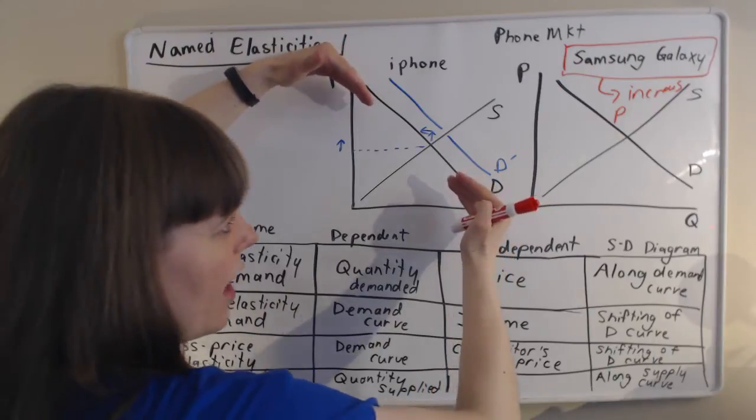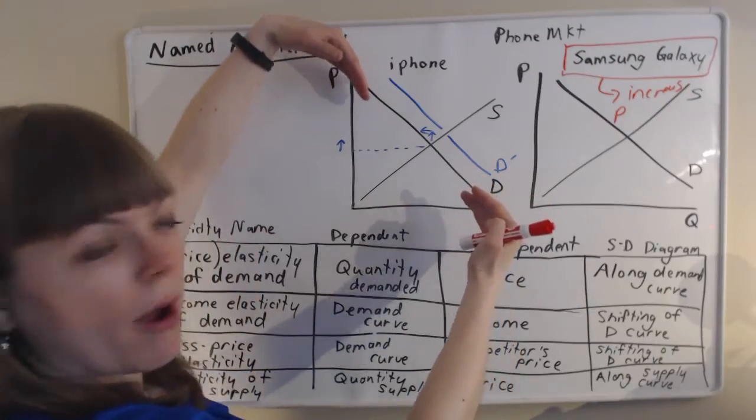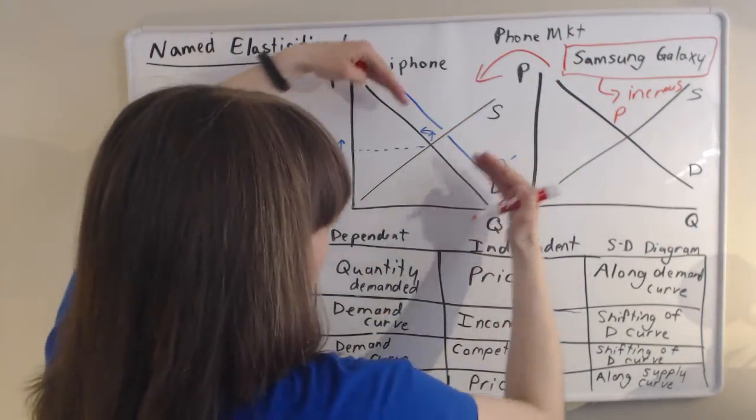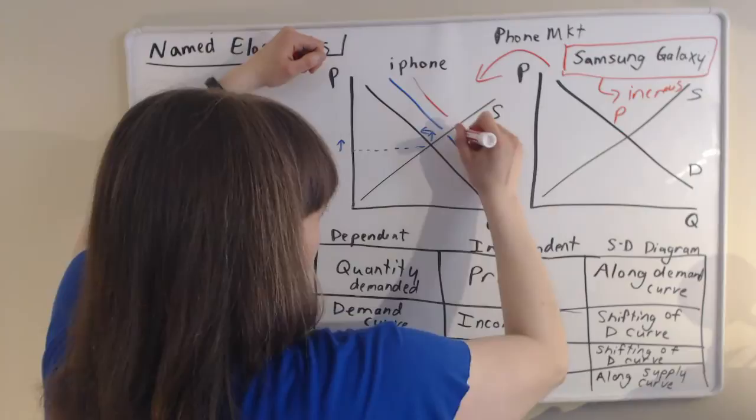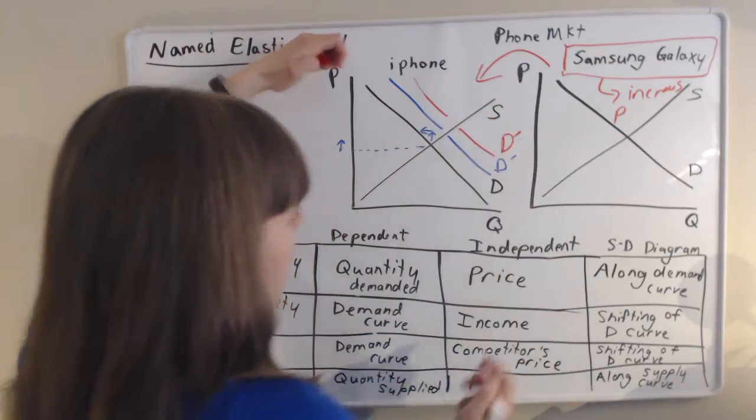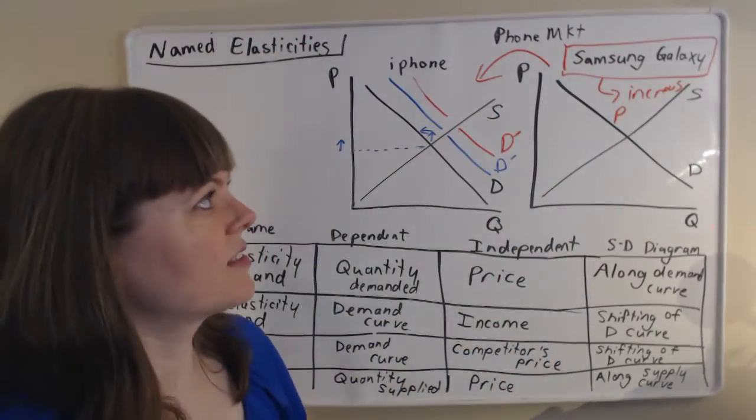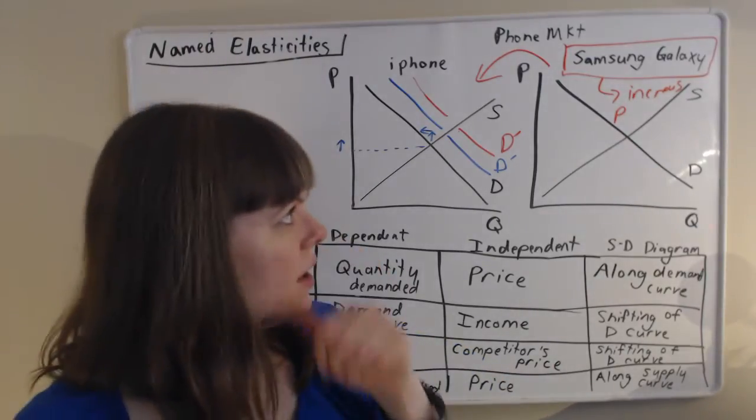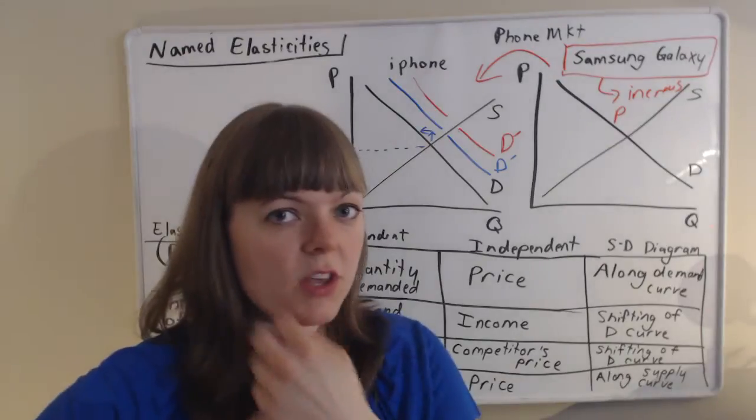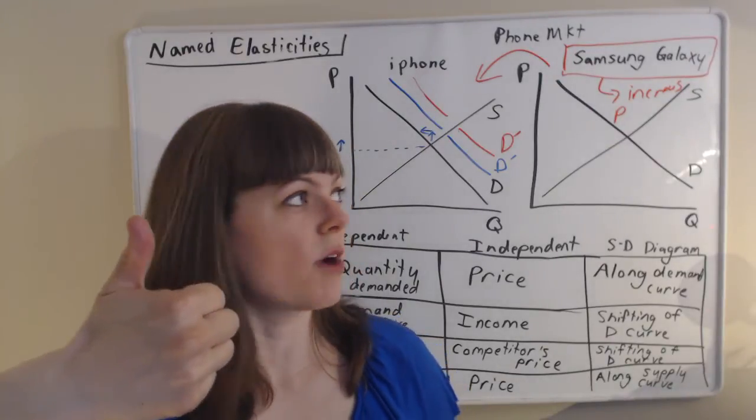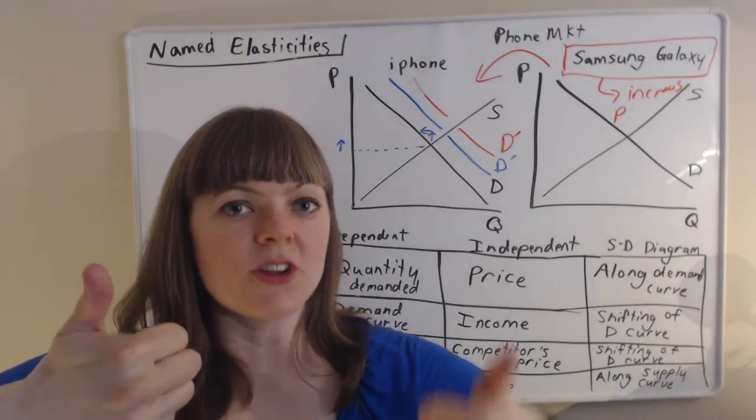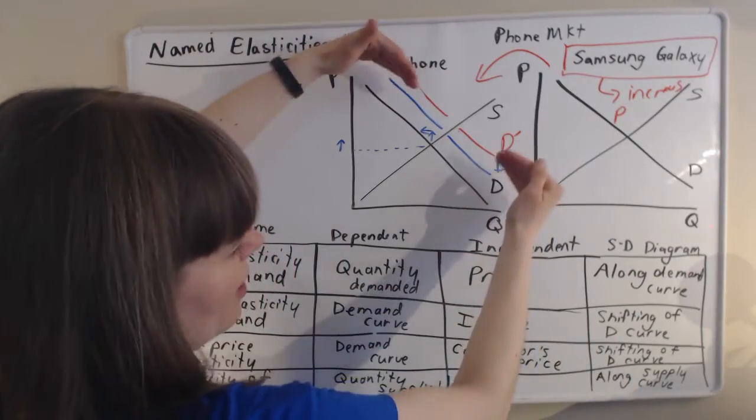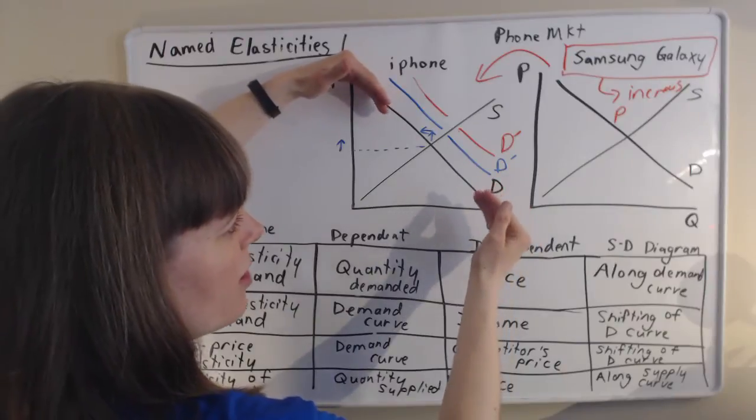So what's going to happen to the demand curve for iPhones? Well, iPhones are going to become more popular as people move over to the substitute, so people move between markets. So we're going to have an increase in the demand for iPhones when Samsung increases their price. So which direction does the cross price elasticity go? It's going to be positive because if Samsung increases their prices, iPhone will experience an increase in their demand curve. But it's also measuring a shift in the demand curve rather than a movement along the demand curve.